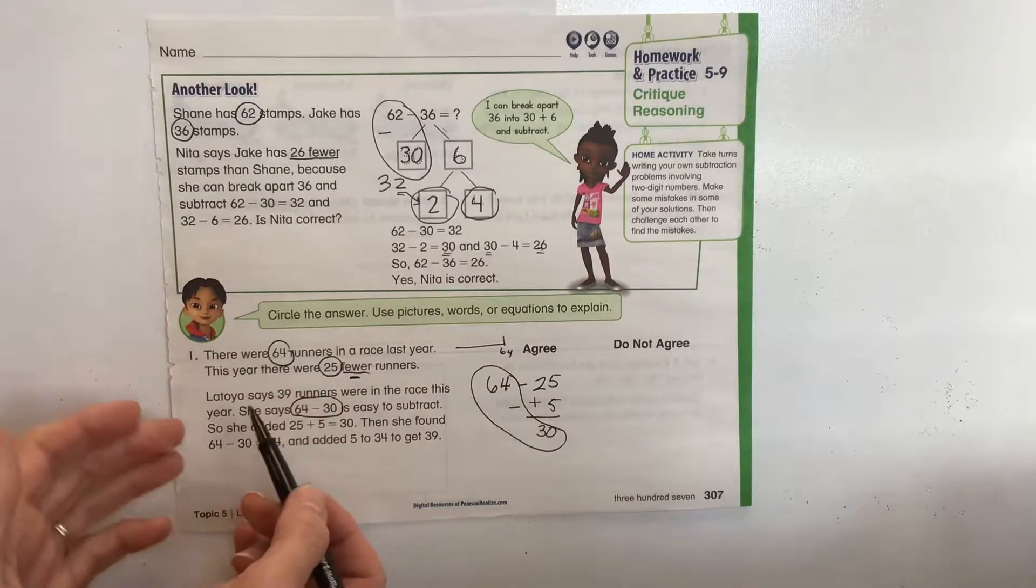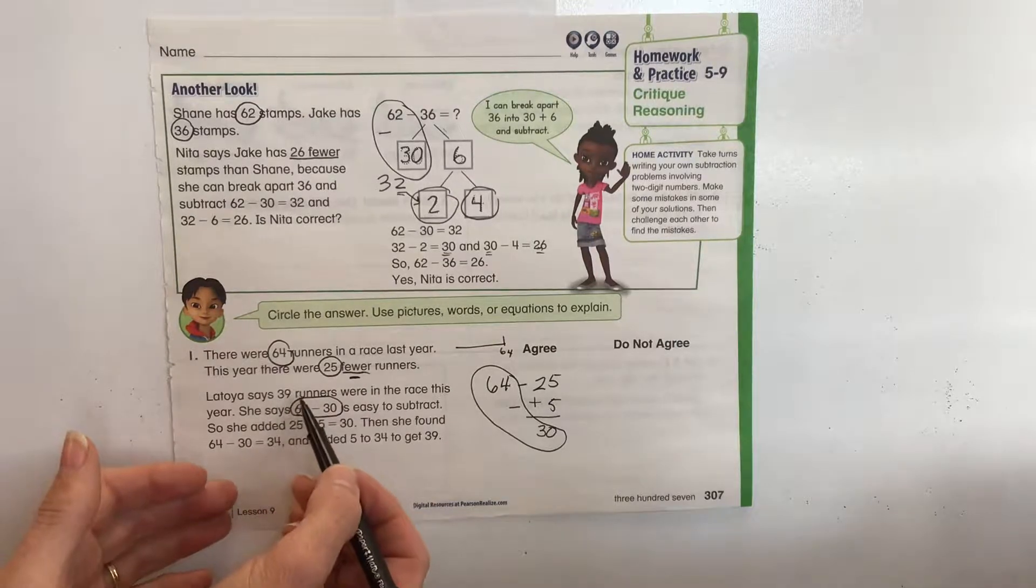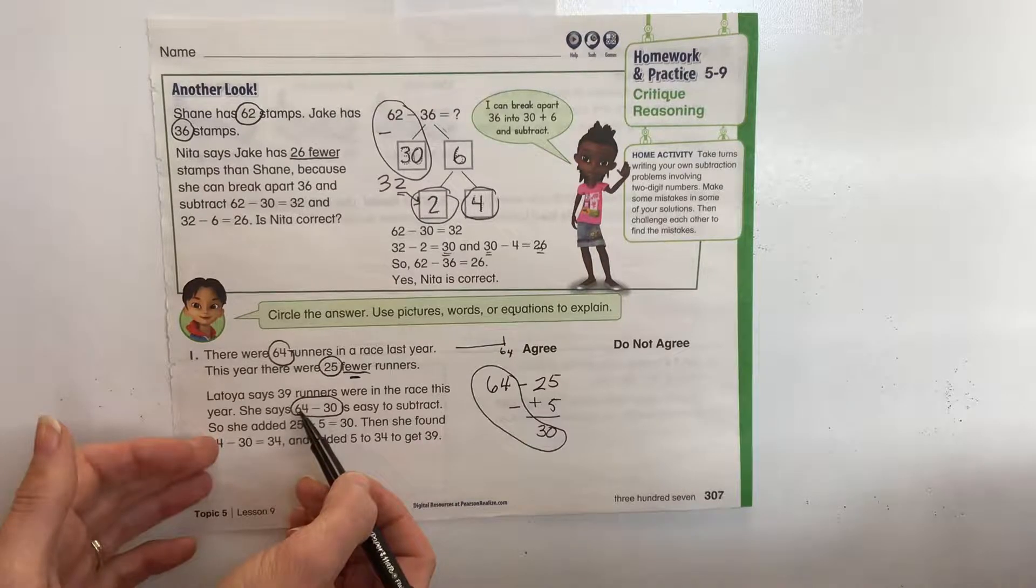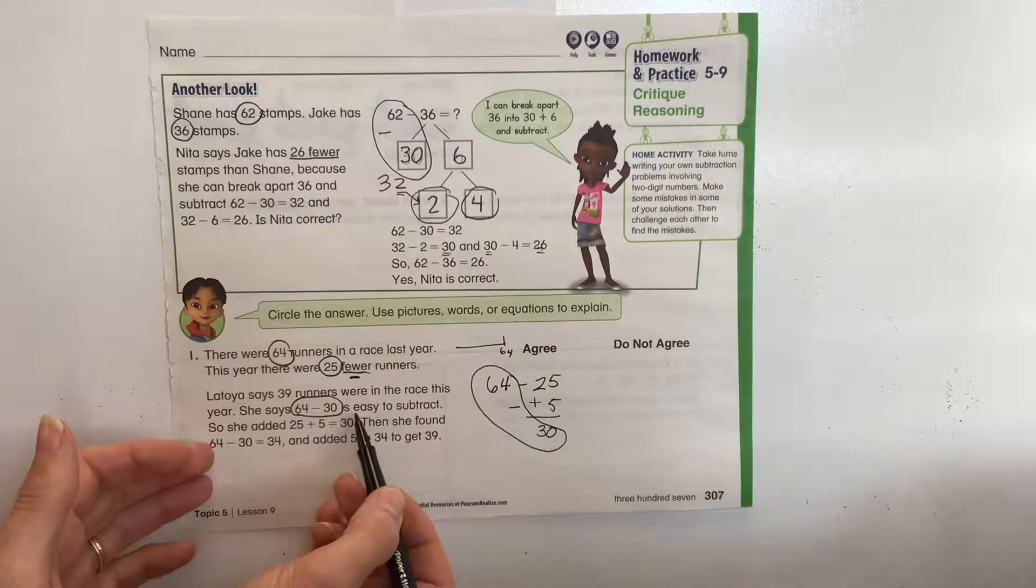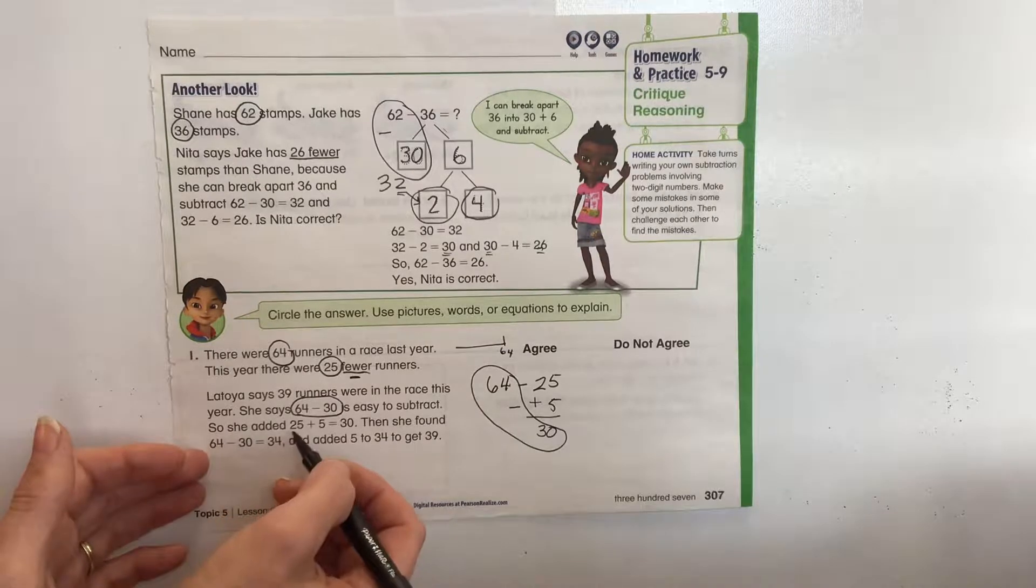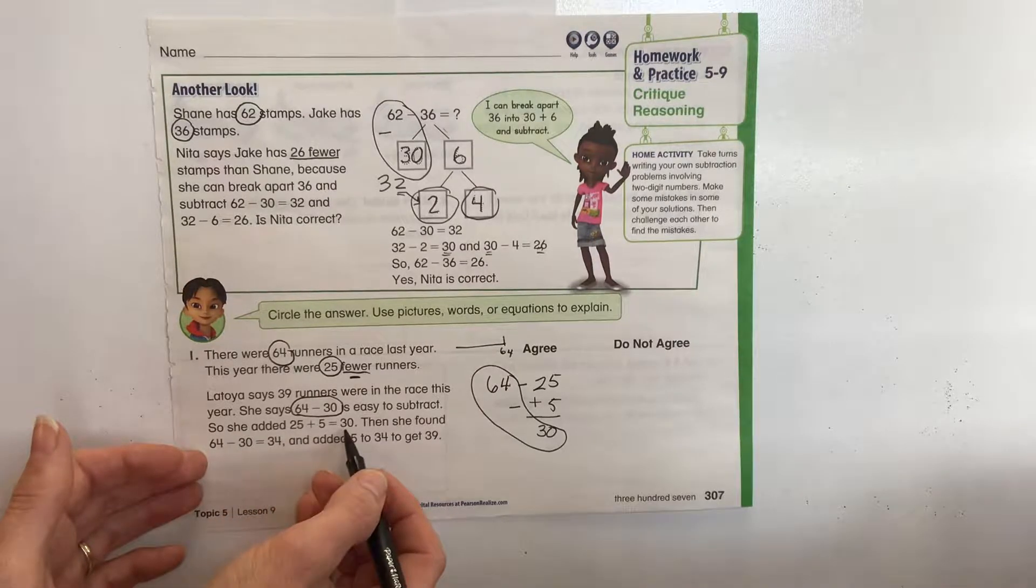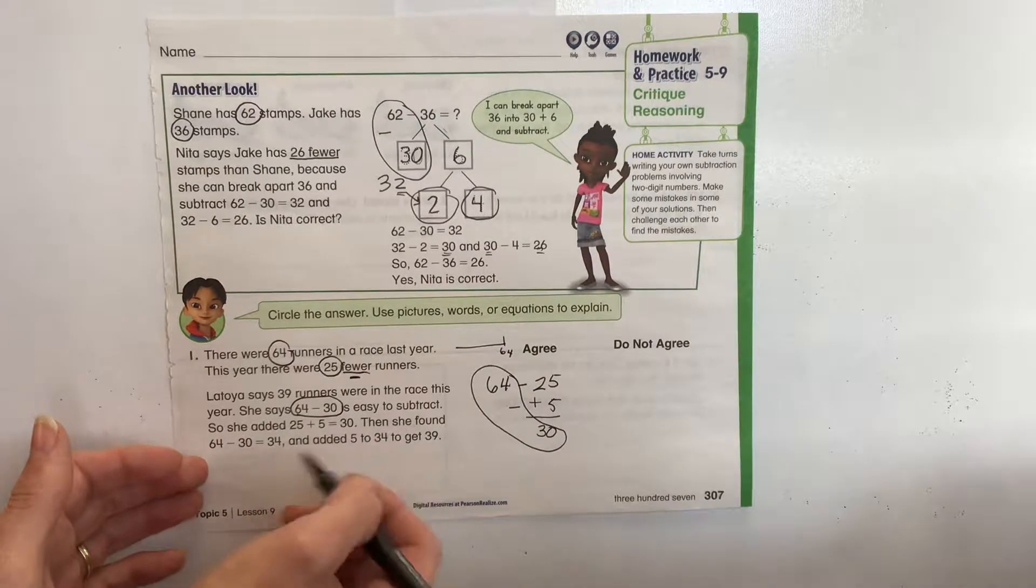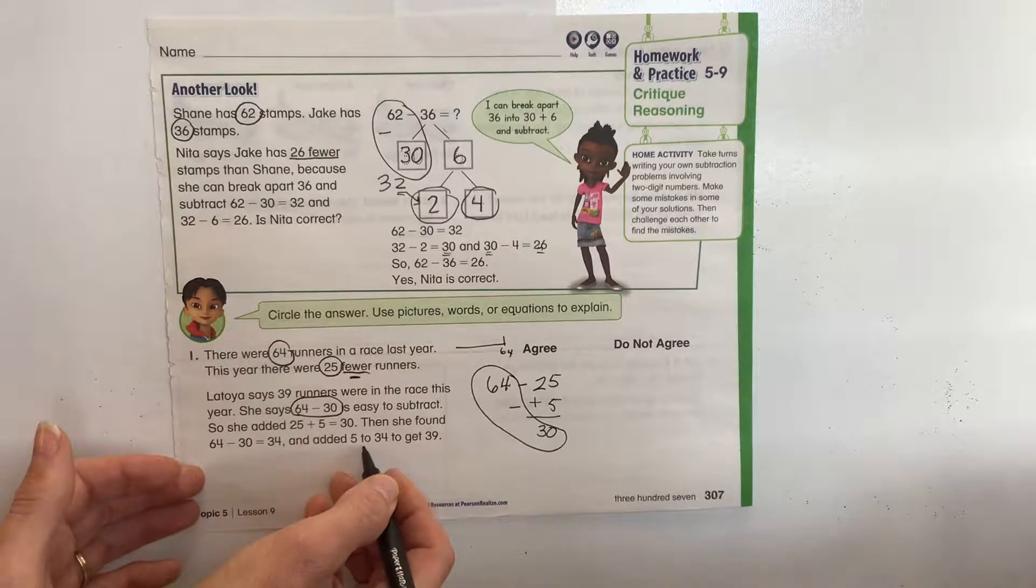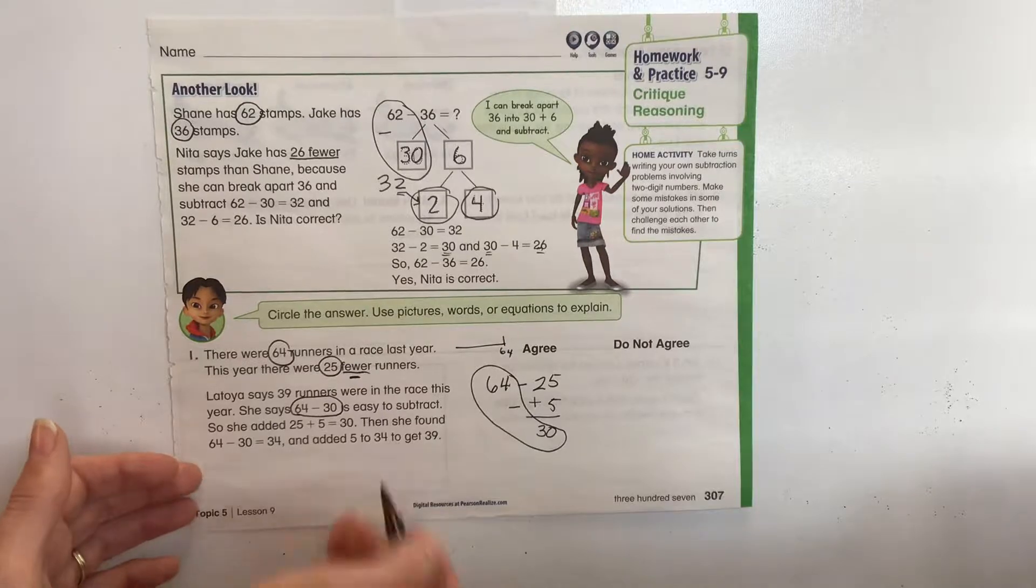But LaToya, the student in the class, says that 39 runners were in the race this year. She says that 64 minus 30 is easy to subtract. So she added 25 plus 5 to equal 30. Then she found 64 minus 30 equals 34, then added 5 to 34 to get 39.